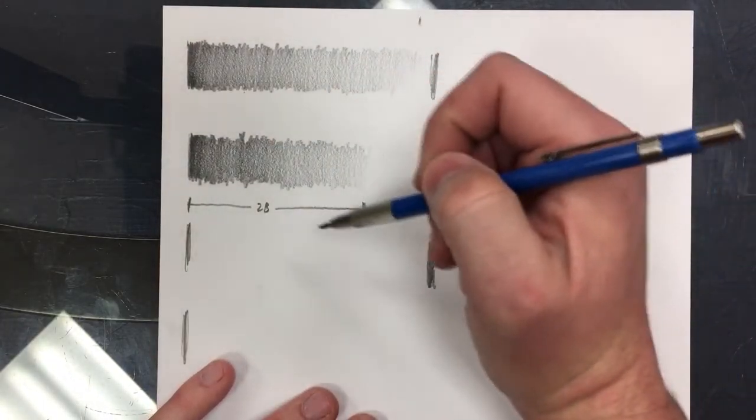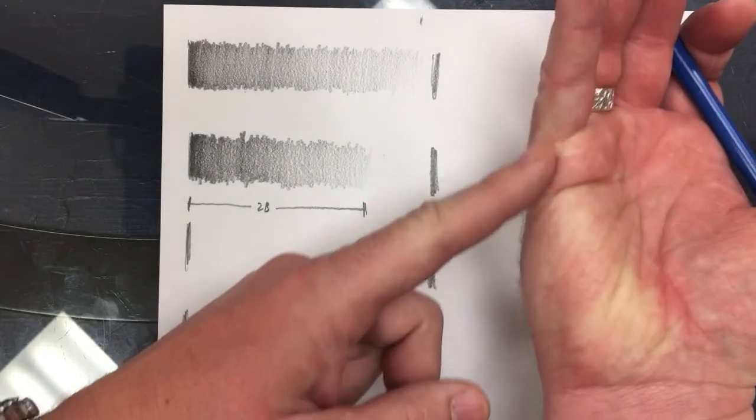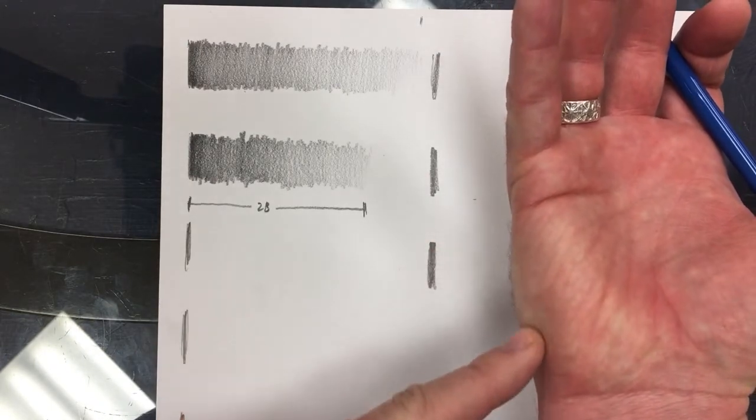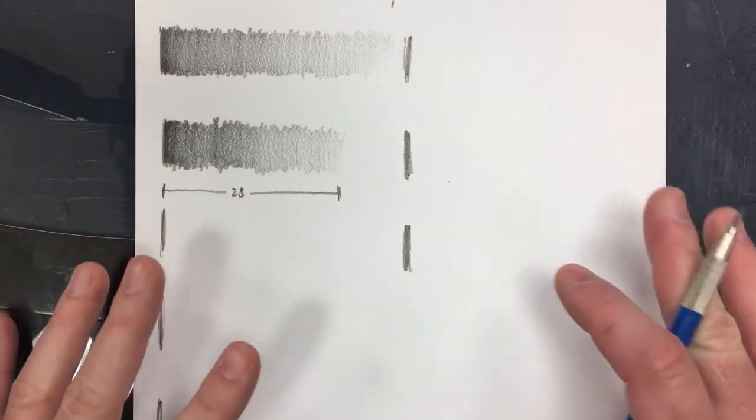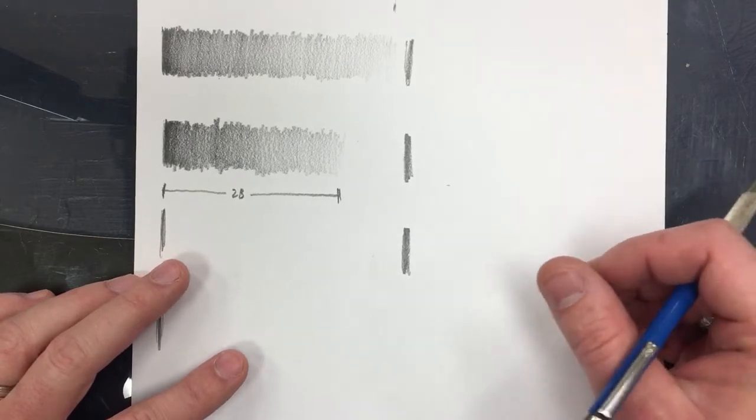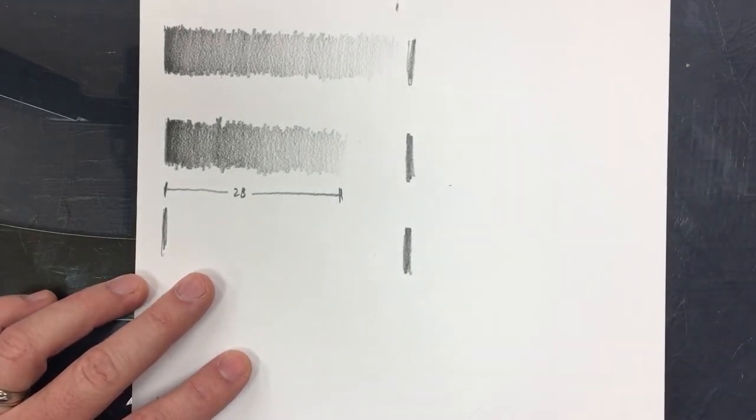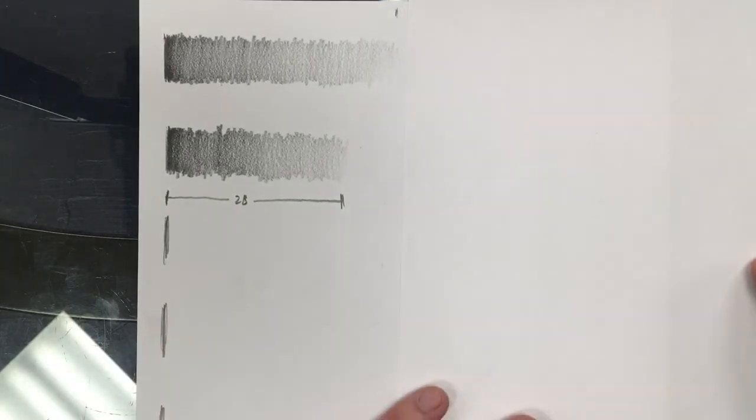These are all marks that while I'm working over here, my hand might be touching. If you've ever had graphite all over the bottom of your hand, it's just transferring and moving around the page, mixing with the oils in your skin and making it very difficult to clean off. So you take a clean sheet of paper and cover all that, and it's going to make a huge difference in the cleanliness of your drawing.